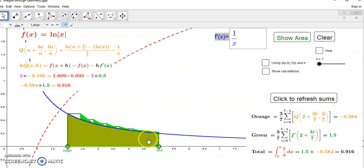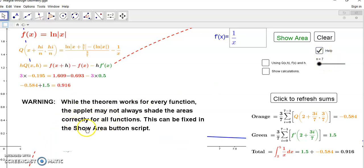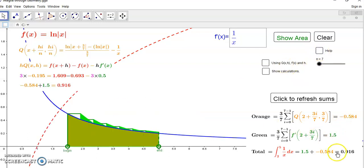The shading is not correct but that's not a problem - the calculations are correct. The total area is 0.916 under the curve. The theorem will work for every function but I haven't been able to get the applet to shade correctly for all functions. My purpose is to show you that it works for all functions and it does because the calculations are the same.